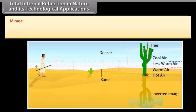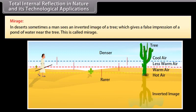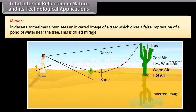Applications of total internal reflection — Mirage: In deserts, a man sometimes sees an inverted image of a tree, giving a false impression of a pond of water near the tree. This phenomenon is called a mirage.